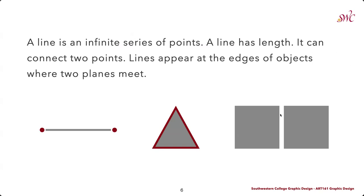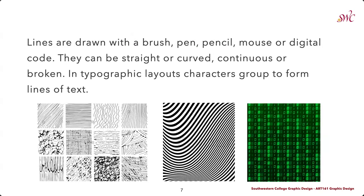We can also think about the negative space or the placement between shapes that might identify lines, such as between two gray boxes. Lines are drawn either with a brush, a pen, or a pencil; they can be created by a mouse or digital code. They can be straight or curved, continuous or broken. In typographic layouts, characters group to form lines of text.